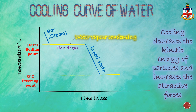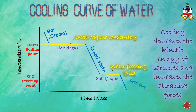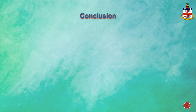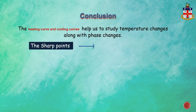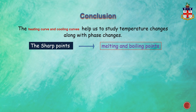The temperature again becomes constant at zero degrees centigrade, which is the freezing point of water. The temperature remains constant and the solid and liquid states co-exist until all the water freezes to ice, shown by a sudden decrease in temperature. The heating and cooling curves help us to study the temperature changes along with the phase changes, and the sharp points in the graph represent the melting and boiling points of the substance.